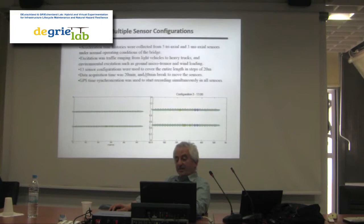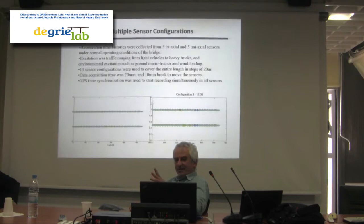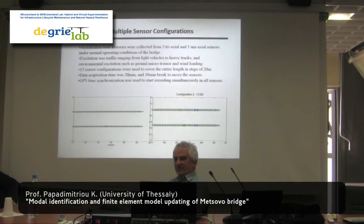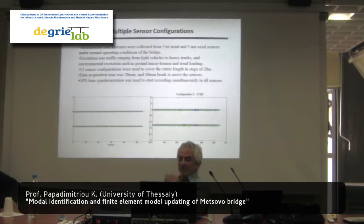Excitation was traffic ranging from light vehicles to heavy trucks, plus wind. Thirteen sensor configurations were covered; for each setup you measure for 20 minutes to collect enough data to estimate modal frequencies, damping ratios, and mode shapes. An additional 10 minutes was used to move four of the six units to new locations. We managed each setup in half an hour; with 13 configurations that means about seven hours total — you have to complete all measurements in one day. Measuring required three persons moving sensors efficiently.